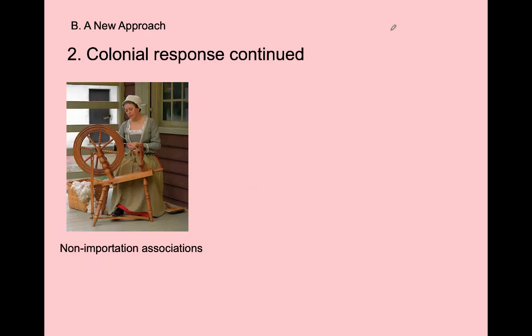In response, colonists think back to the Stamp Act crisis when non-importation agreements and boycotts shook England and convinced them to repeal the Stamp Act. So once again, after the Townshend Acts are passed, colonists refuse to buy goods made in England. We see a picture of a woman who, instead of buying a dress from England, is making homespun clothing—being very patriotic. Women are critical in this effort: they enforce the boycott and make clothes for their families.